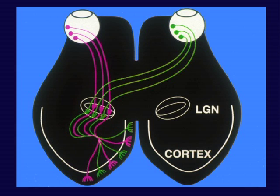The point I want to make is that these connections are not just random — they're highly organized. One aspect of this organization is that the inputs from the two eyes are strictly segregated from each other, both at the level of the lateral geniculate nucleus and at the level of primary visual cortex. In the LGN, retinal ganglion cells send their connections to layers that are specific for the eye of origin — left eye ganglion cells to left eye layers, right eye ganglion cells to right eye layers.